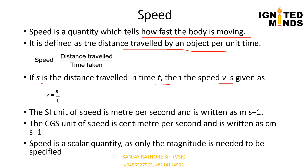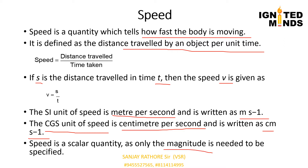The SI unit of speed is metre per second, and the CGS unit of speed is centimetre per second. In our daily life, the speed of moving buses, cars, trains and aeroplanes is expressed as kilometre per hour. Speed is a scalar quantity, as only the magnitude — the value — is needed to be specified.